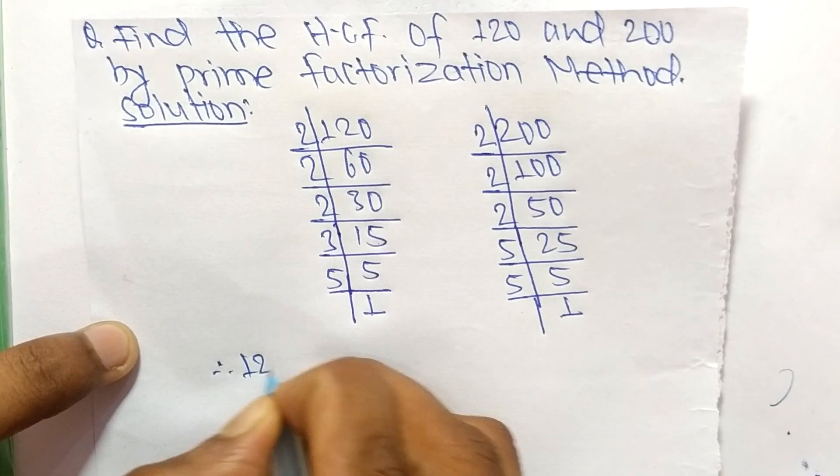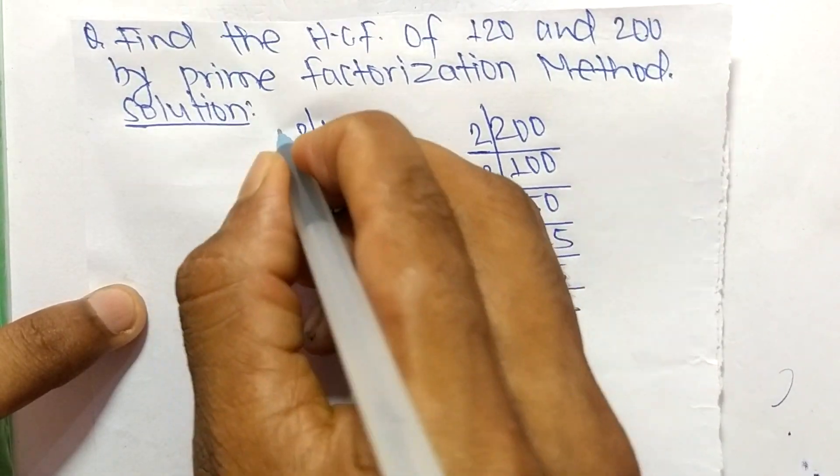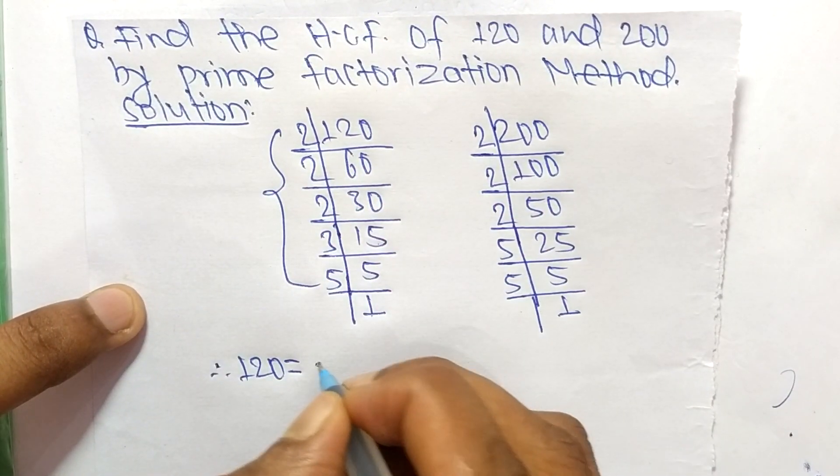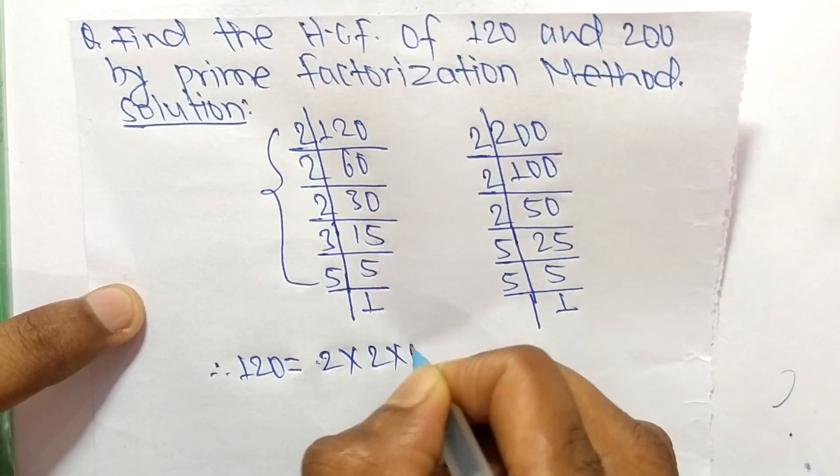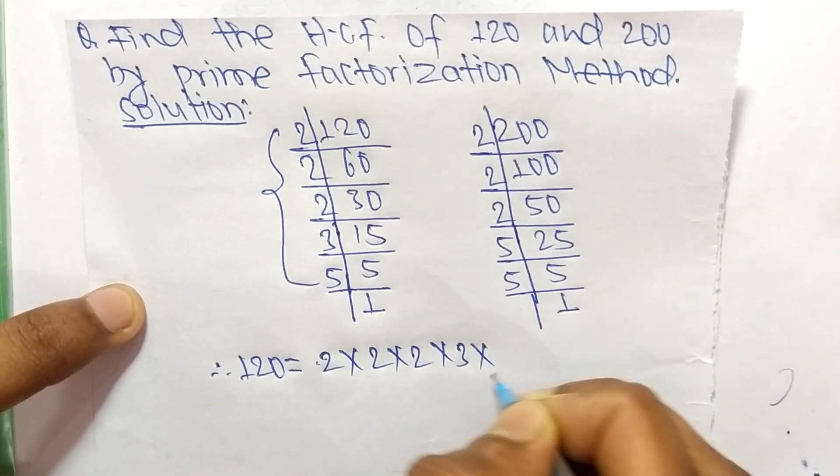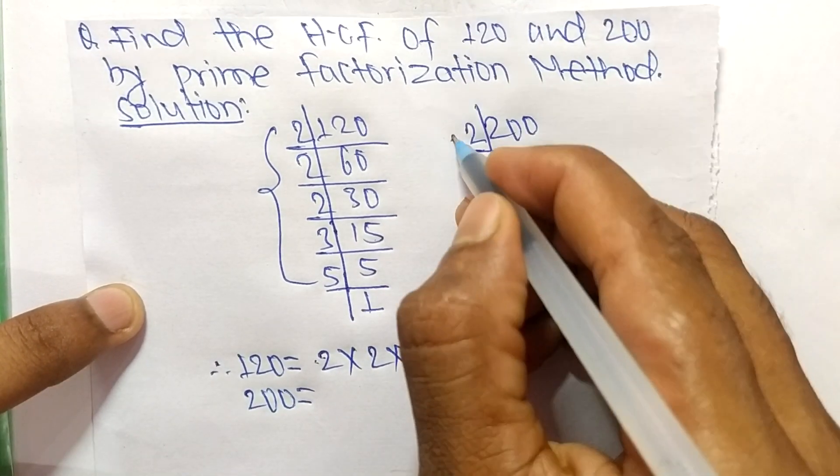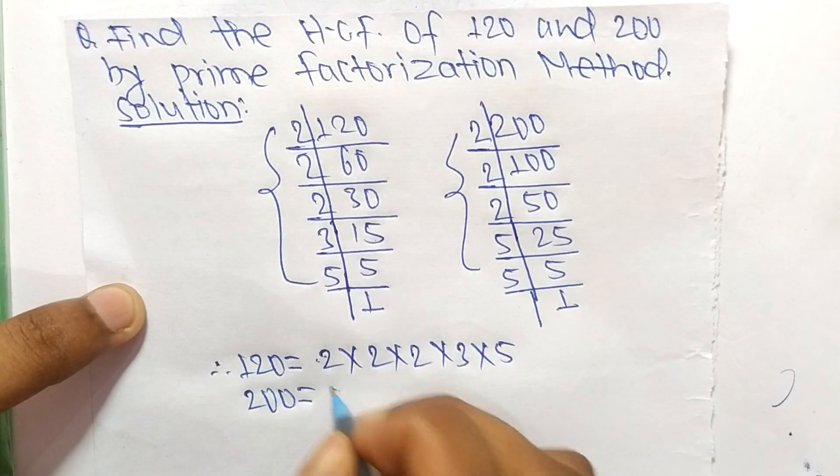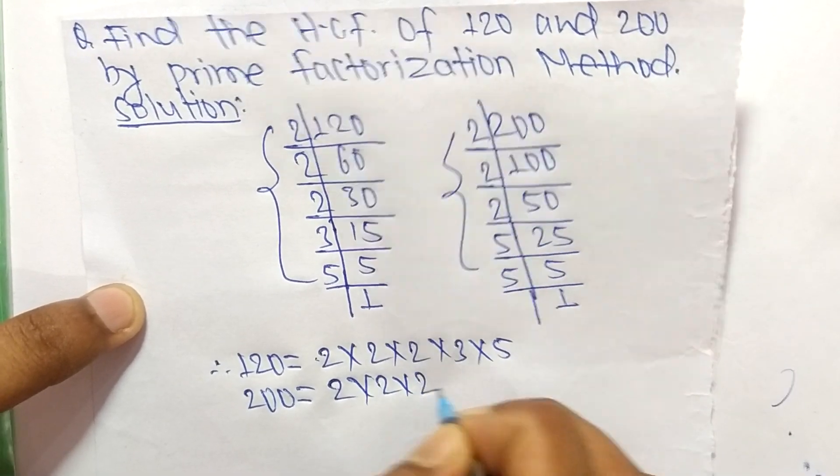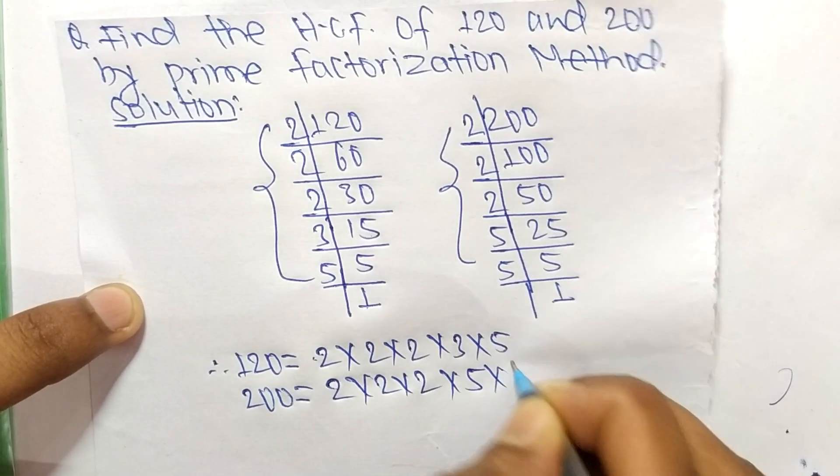From these prime factors we can write 120 equals 2 times 2 times 2 times 3 times 5. Similarly, 200 equals 2 times 2 times 2 times 5 times 5.